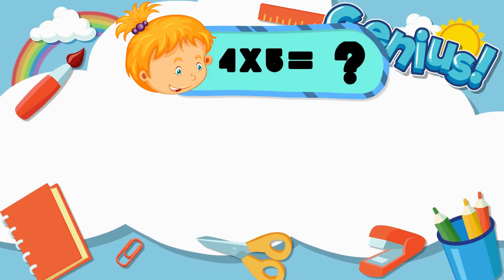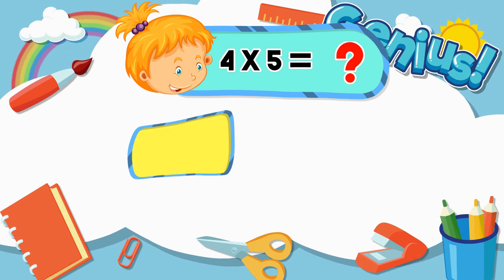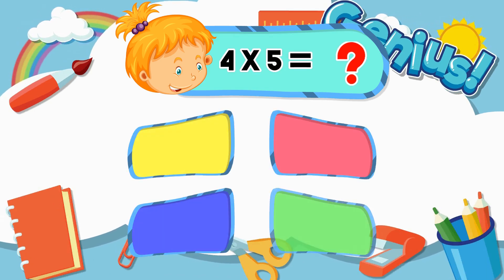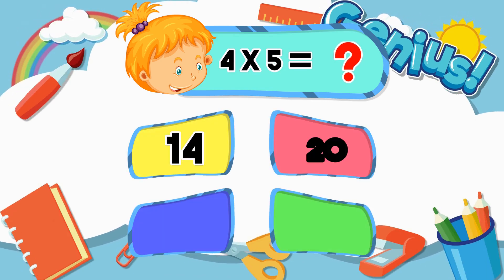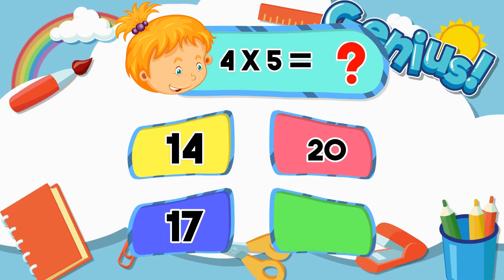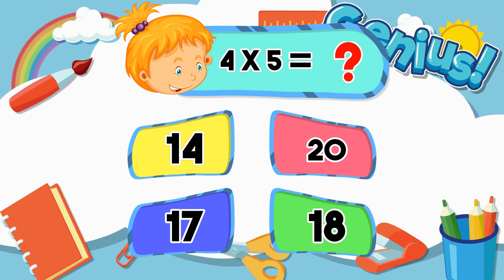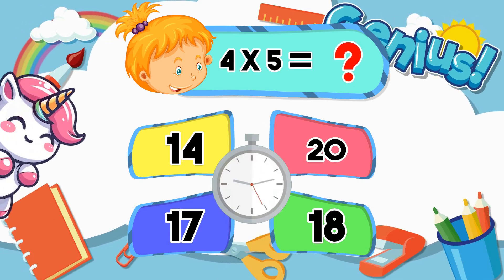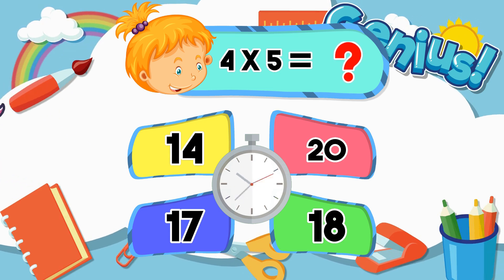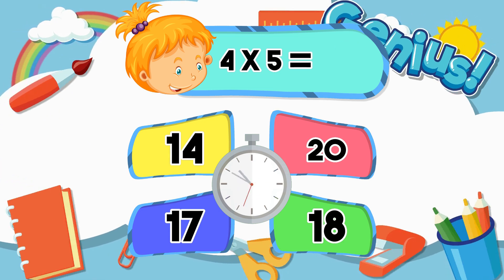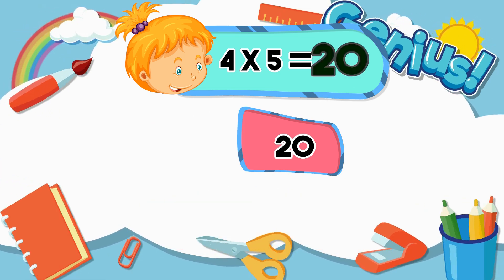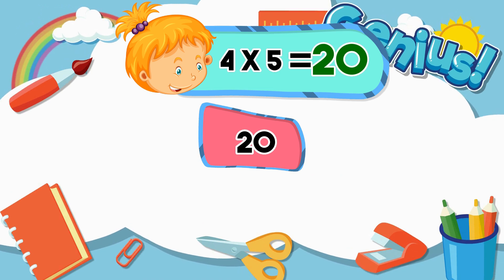What is 4 times 5? Options: 14, 20, 17, 18. Answer: 20.